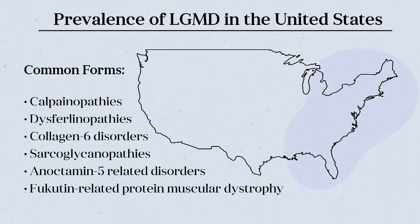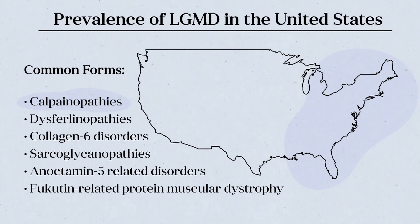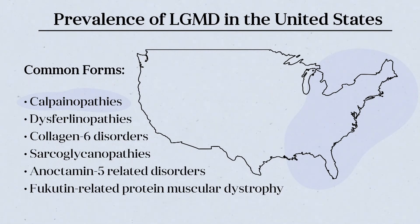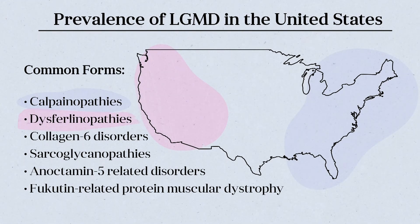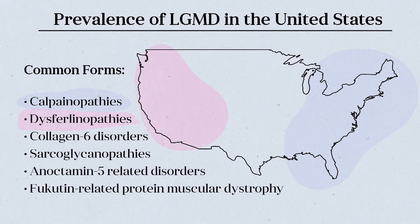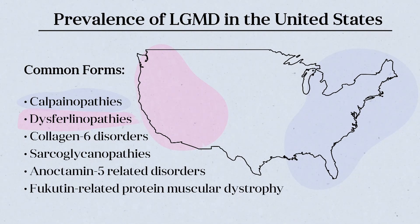It's noteworthy that on the east coast of the United States, the calpainopathies are the most prevalent of the limb-girdle muscular dystrophies. This likely also holds true in the central U.S. In contrast, in the west, particularly on the west coast, dysferlinopathies are most common because of the greater prevalence of this disease in Asian and Hispanic populations.